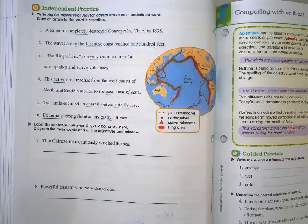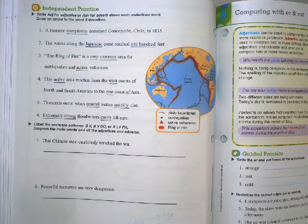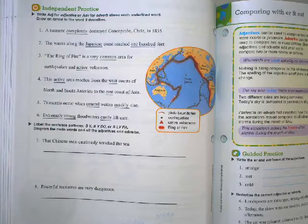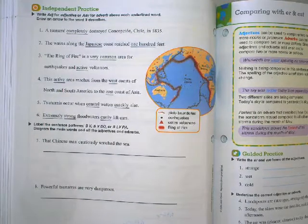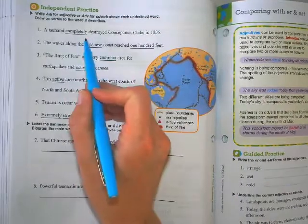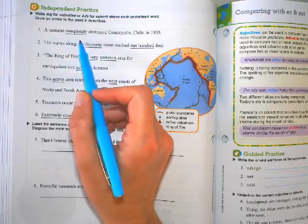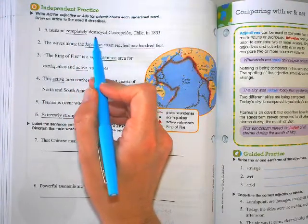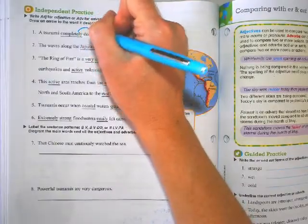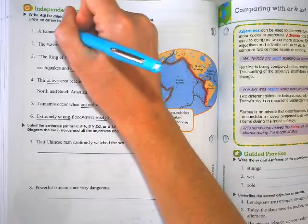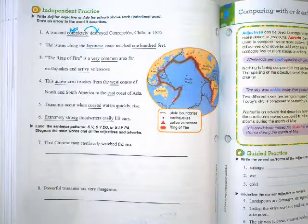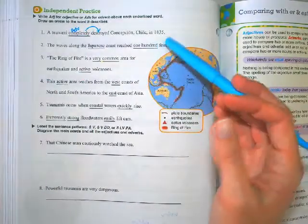So number one says a tsunami completely destroyed, I'm going to go with just Chile in 1835. I wasn't prepared for that. Okay. So we have the word completely underlined. What is completely describing? It's describing or helping out with the verb, which is destroyed. So we're going to draw an arrow to destroyed. And this is an adverb because it describes the verb.